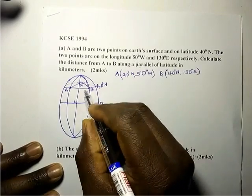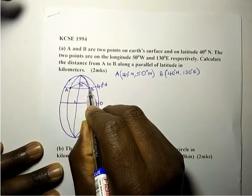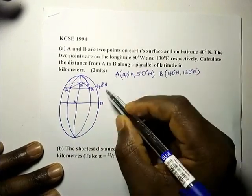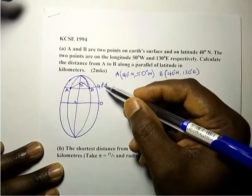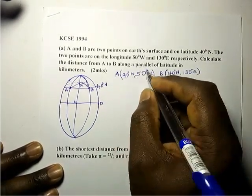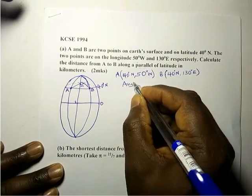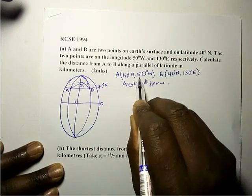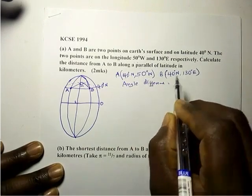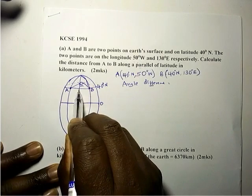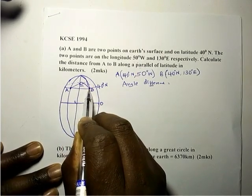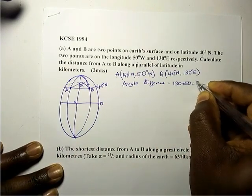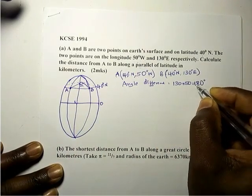This alpha here is the angle we need. How do we calculate the distance? First we need to get the angle difference. On a small circle, the angle difference: we have 50 west and 130 east. From 0 to 50 is 50, and from 0 to 130 is 130, so we add them: 130 plus 50 gives us 180 degrees. That is our angle difference.